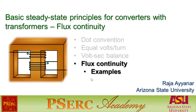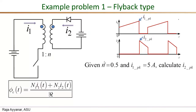In this video I'm going to discuss two examples related to the concept of flux continuity, which will hopefully give us further insights into different aspects of this flux continuity requirement, and also serve as a lead-in to our development of isolated converters in future videos. The first example problem is related to the flyback type converters we saw in a previous video, and the second covers a different class of converters.